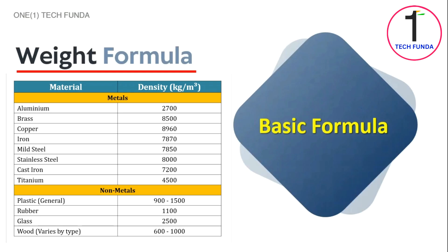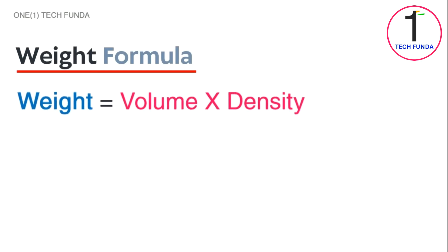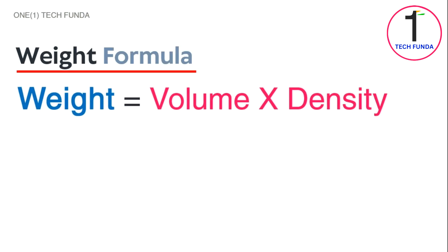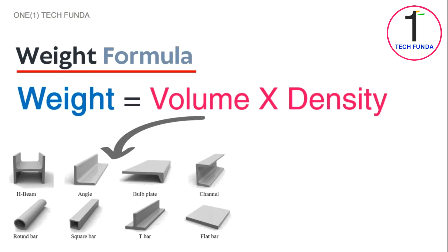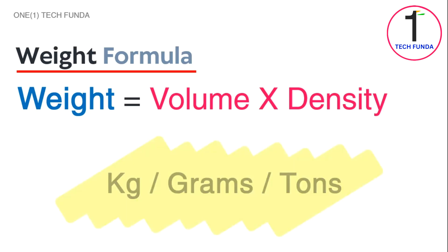Let's get started. The weight of a material is calculated using a simple formula: Weight is equal to volume multiplied by density. Volume depends on the shape of the material, and density is a standard value for each material, usually found in material data sheets. The final weight will be in kg, grams, or tons.